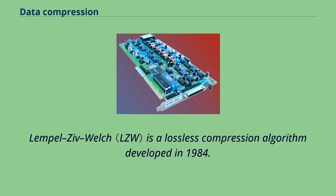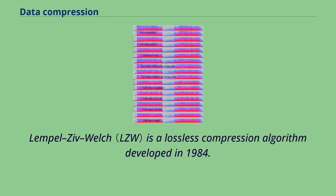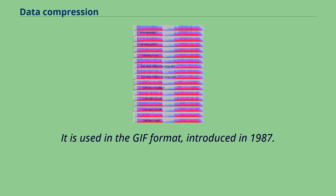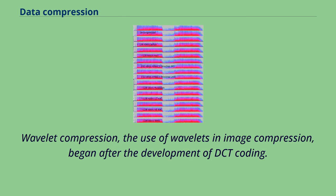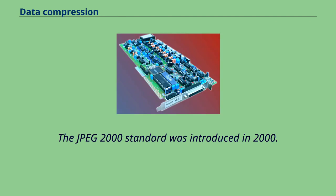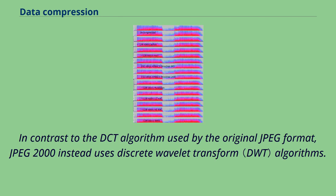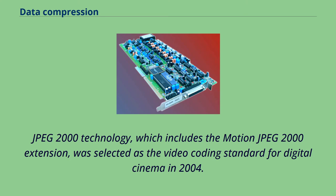JPEG greatly reduces the amount of data required to represent an image at the cost of a relatively small reduction in image quality and has become the most widely used image file format. Its highly efficient DCT-based compression algorithm was largely responsible for the wide proliferation of digital images and digital photos. Lempel-Ziv-Welch is a lossless compression algorithm developed in 1984. It is used in the GIF format, introduced in 1987. Deflate, a lossless compression algorithm specified in 1996, is used in the Portable Network Graphics format. Wavelet compression began after the development of DCT coding. The JPEG 2000 standard was introduced in 2000, using discrete wavelet transform algorithms, and was selected as the video coding standard for digital cinema in 2004.